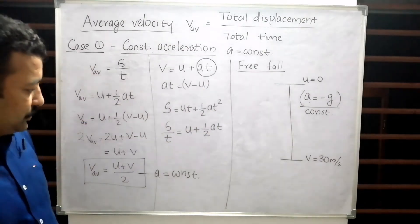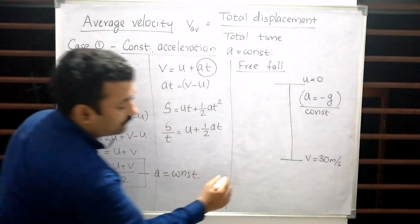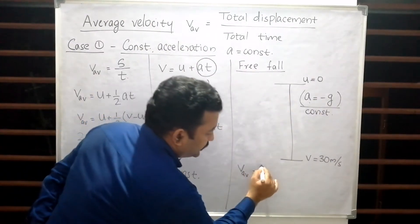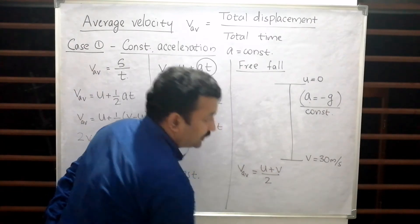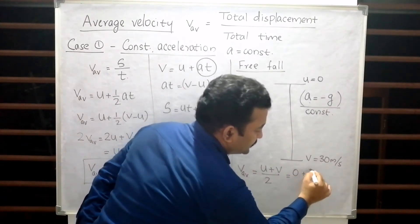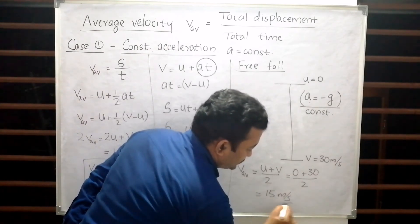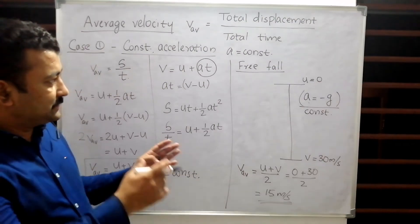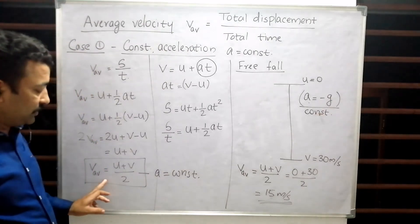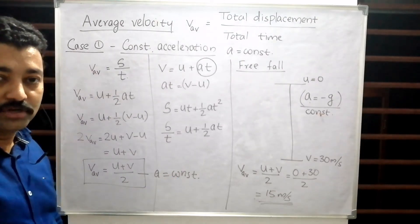Now applying this to the problem: V_average equals initial velocity plus final velocity divided by 2. Initial velocity is 0 (free fall), and final velocity is 30 meters per second. So V_average equals (0 + 30) / 2 = 15 meters per second. That's an easy way to solve the problem even when displacement is not given, because we know V_average = (u + v)/2 for a constantly accelerated particle.